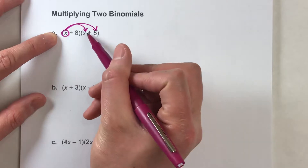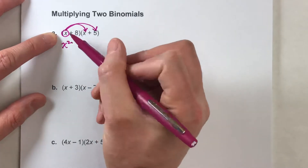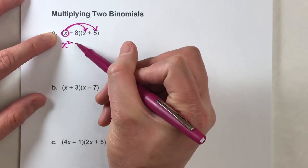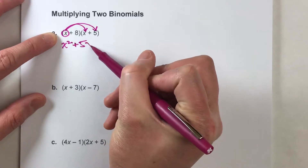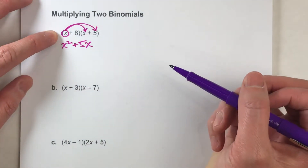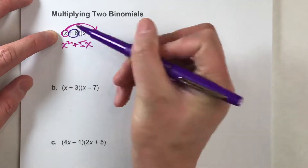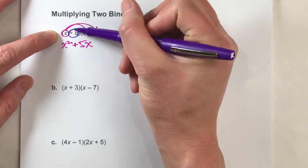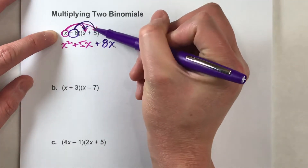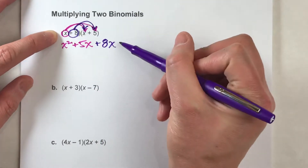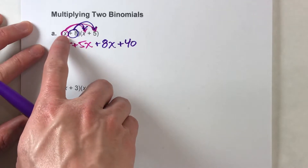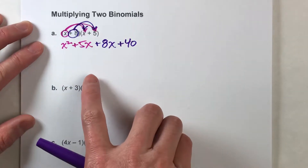So all of this stuff in parentheses is being multiplied by everything in parentheses over here. I take the first term and multiply everything in the second set of parentheses by that first term. So I have to do x times x, which is x squared. And then x times positive 5, which is positive 5x. And then positive 8 times x is positive 8x. And then positive 8 times 5, which is positive 40.